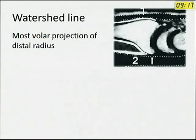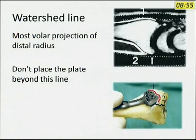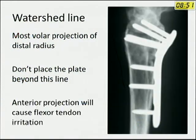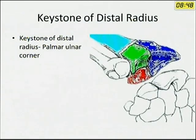Another important anatomical point is the watershed line, which is the most volar projection of the distal radius. The pronator quadratus does not cover this portion. So if you place an implant there, it may irritate soft tissues like the median nerve and flexor tendons. You should not place the plate too distally, as it may lead to soft tissue irritation.